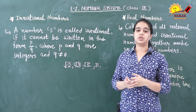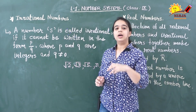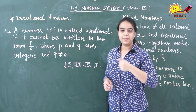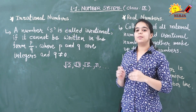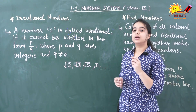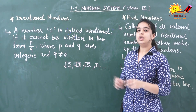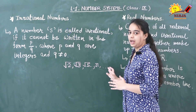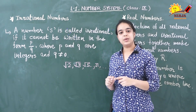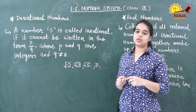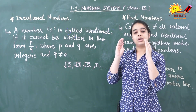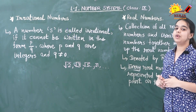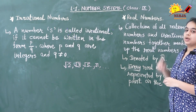Now we are having irrational numbers. If you remember, in the previous section we collected some numbers in a bag — all those numbers were rational numbers. Now if I add irrational numbers also into that bag, we are having rational numbers as well as irrational numbers in our bag. That collection of rational numbers and irrational numbers we can call real numbers.